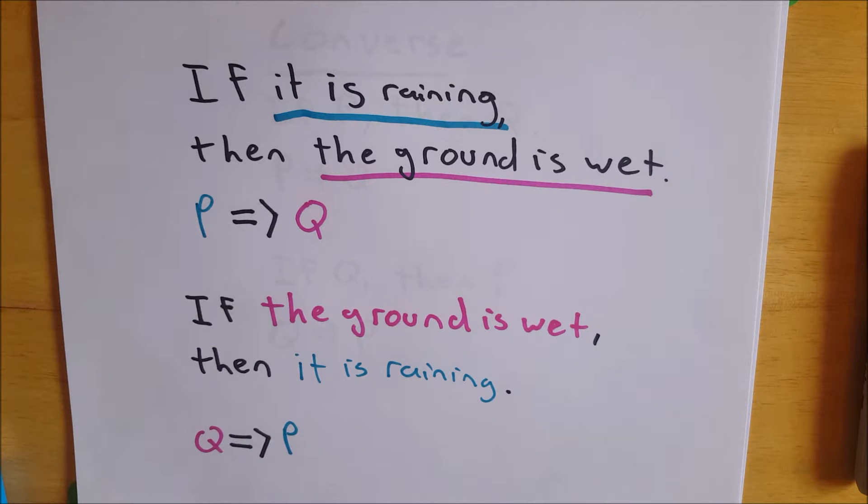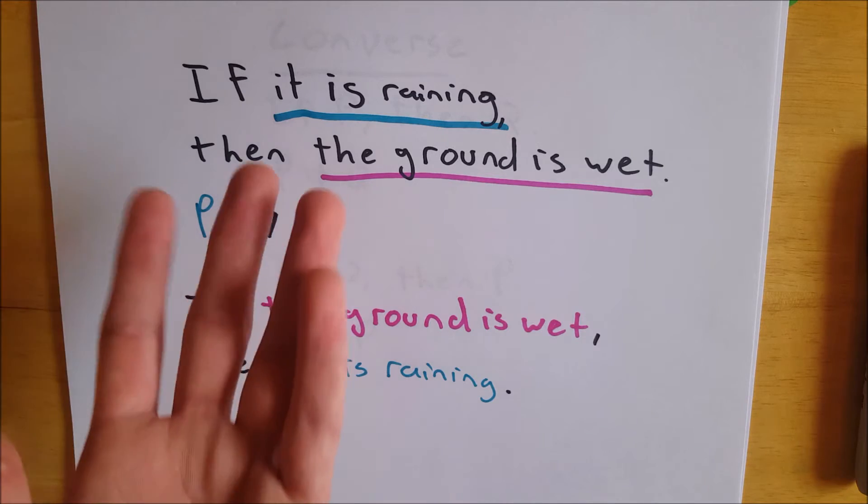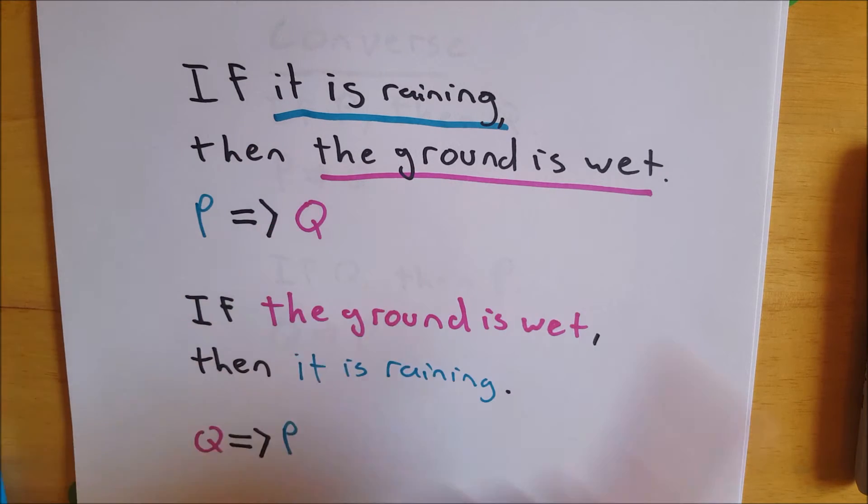Of course, notice that this first statement, pretty much true: if it is raining, then the ground is wet. Of course, you could get into specifics, well, where is it raining, where is the ground? But generally, if it is raining, then the ground is wet. That's a true statement.